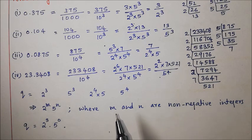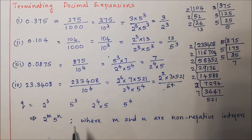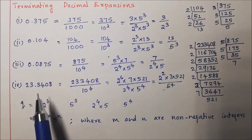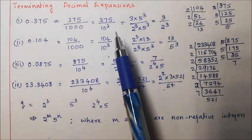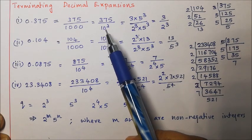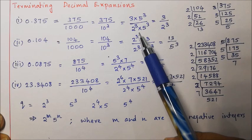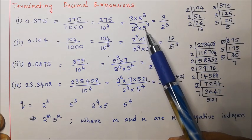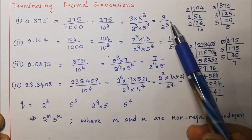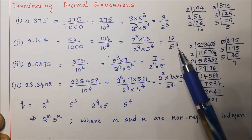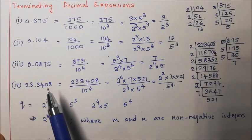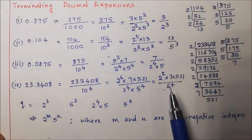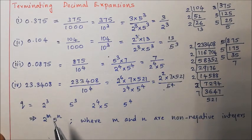So, any terminating decimal expansion can be written with denominator as a power of 10. Whenever the denominator is a power of 10, we can represent it as powers of 2 and 5. After cancelling common factors, the denominator will be in the power of either 2, or 5, or both. We can conclude: any terminating decimal expansion can be represented as a rational number p by q where q is of the form 2 to the power m into 5 to the power n, with m and n non-negative integers.